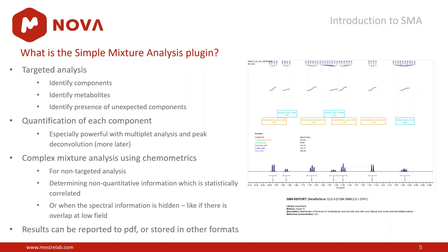The plugin's main objectives are: first, targeted analysis — identifying components of interest, which could be metabolites. By identifying the expected components, it can also identify the presence of unexpected components. Then, for each component of interest, it will quantify them using advanced quantification tools within MNOVA. In cases where you need more, you can use chemometrics capabilities to extract information in situations where there may be overlapping signals or hidden spectral information.